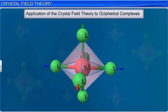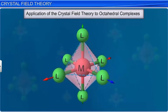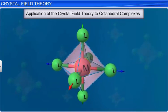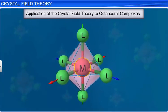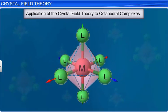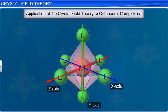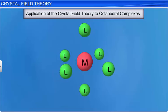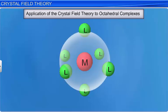Let's look at the application of the crystal field theory to octahedral complexes. In octahedral complexes, the metal ion is at the center of the octahedron and the six ligands lie at the six corners of the octahedron along the three axes X, Y and Z as shown here. The approach of the ligands towards the central metal ion is considered a two-step process. In the first step, it is assumed that the ligands approach the metal ion spherically, that is, at the same distance from each d-orbital.